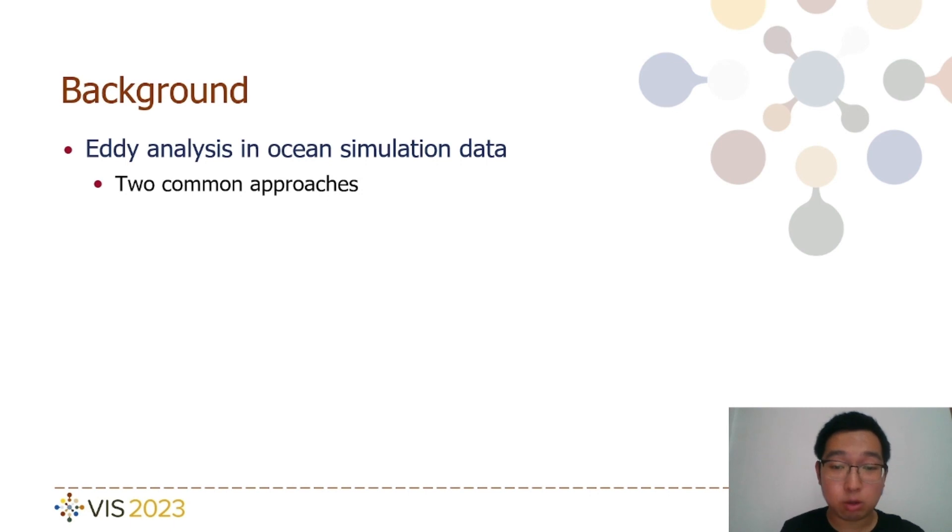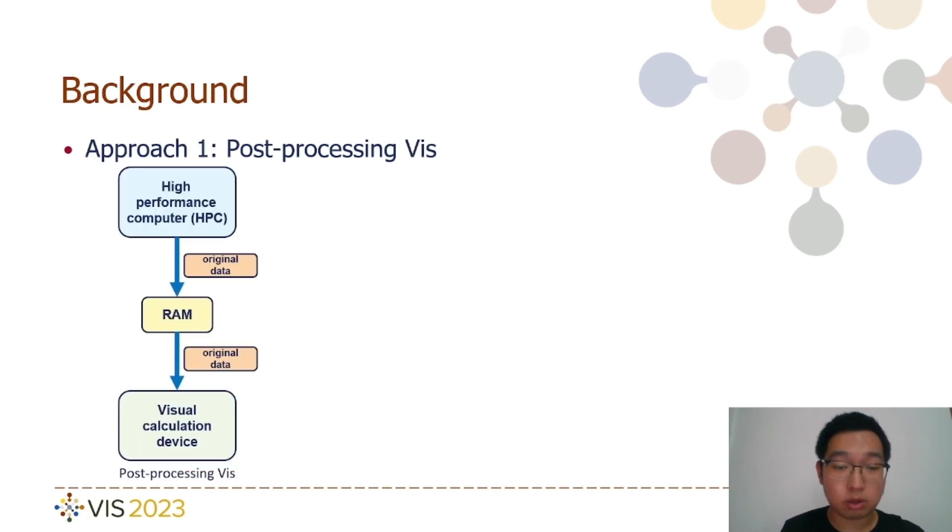Currently, there are two commonly used approaches for analyzing the evolution of ocean eddies. The first approach relies on conventional post-processing visualization techniques. In this approach, the ocean flow field simulation data generated on a high-performance computer is initially stored on a hard disk. When visual analysis is needed, the flow field data is read from the hard disk, and events related to the evolution of ocean eddies are identified using event detection approaches. In this approach, it is essential to transmit and store external raw flow field data and subsequently conduct eddy detection, tracking, and other in-depth analysis on the visualization device.